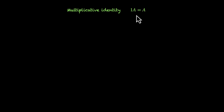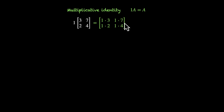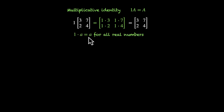Then we have multiplicative identity. This says that you have the number 1 and you multiply it with a matrix to get the same matrix. This one is more straightforward: 1 times [3, 7, 2, 4] gives 1 times 3, 1 times 7, 1 times 2, 1 times 4, which equals [3, 7, 2, 4]. We can do this because 1 times any real number is the same number. So this works for real numbers, and this also works for matrices.